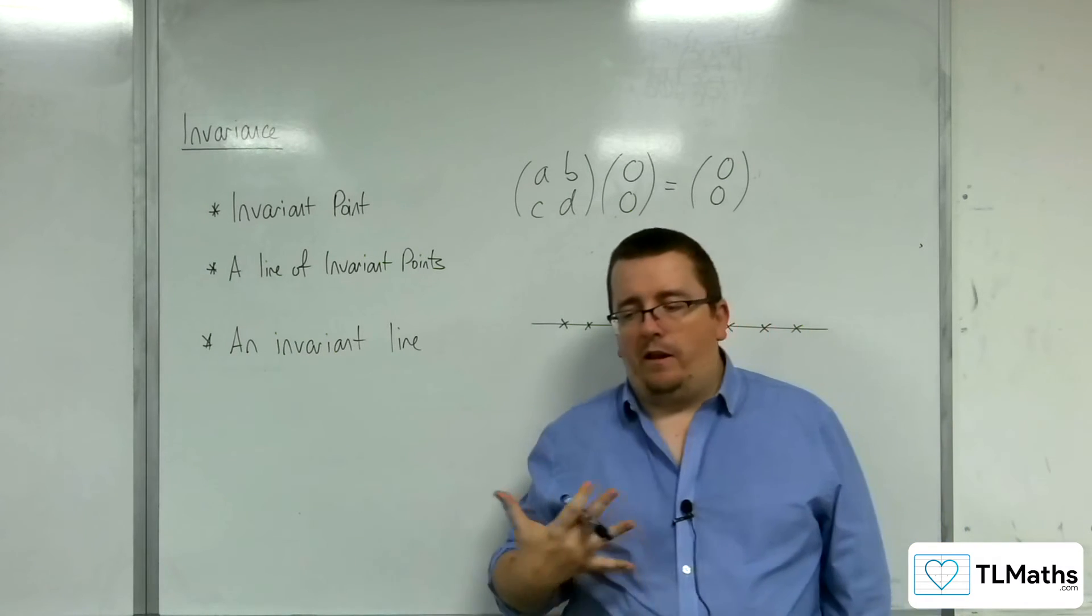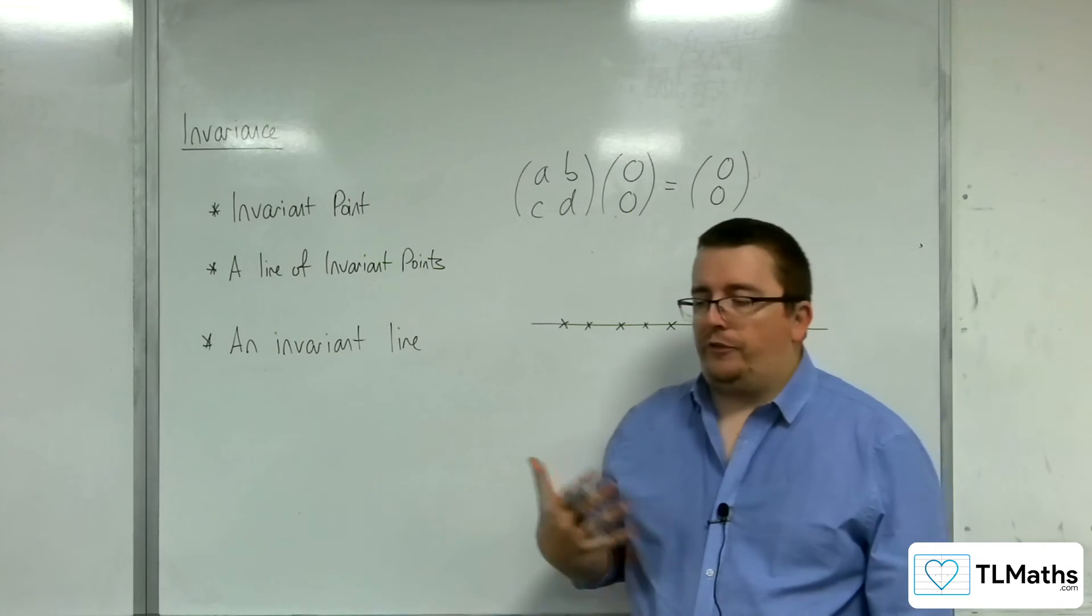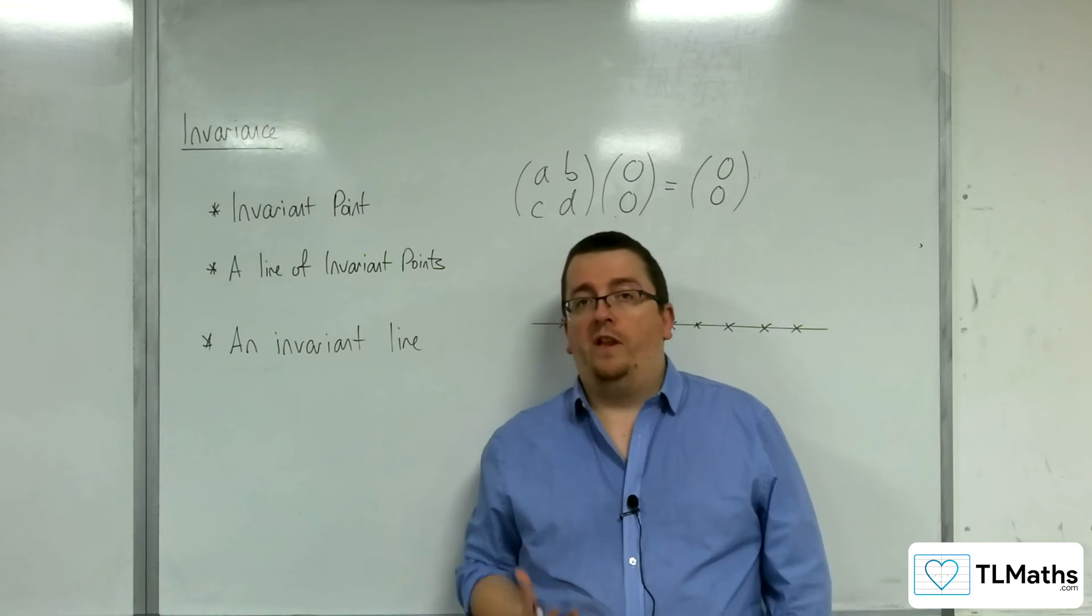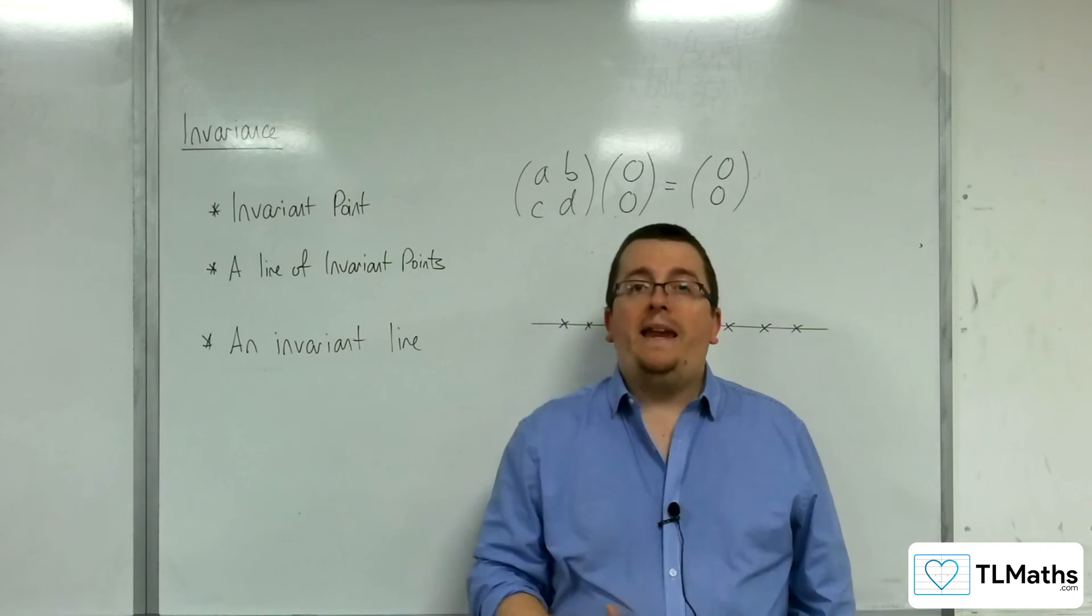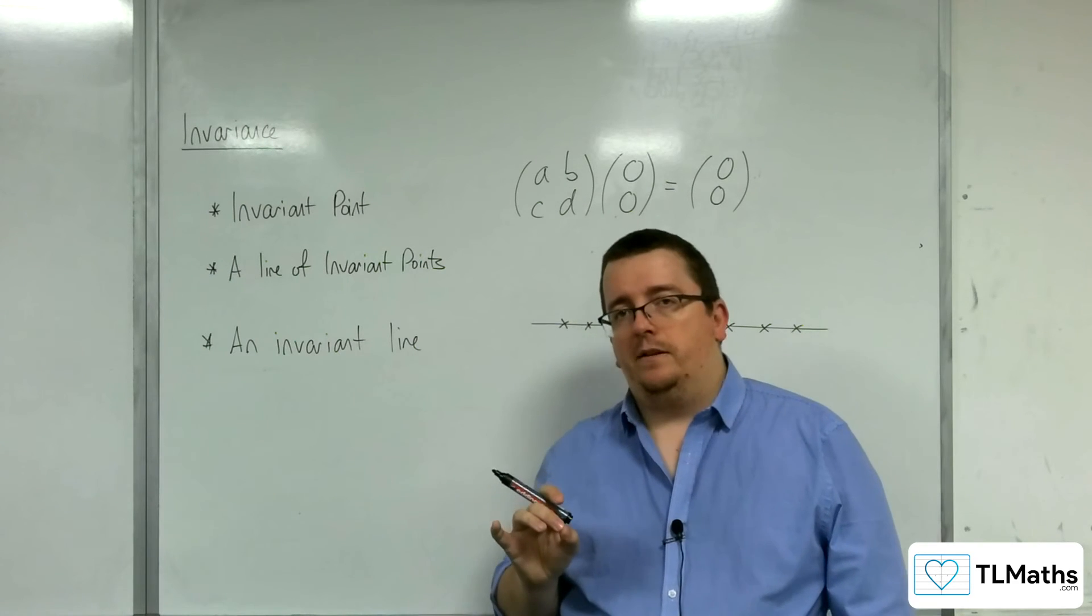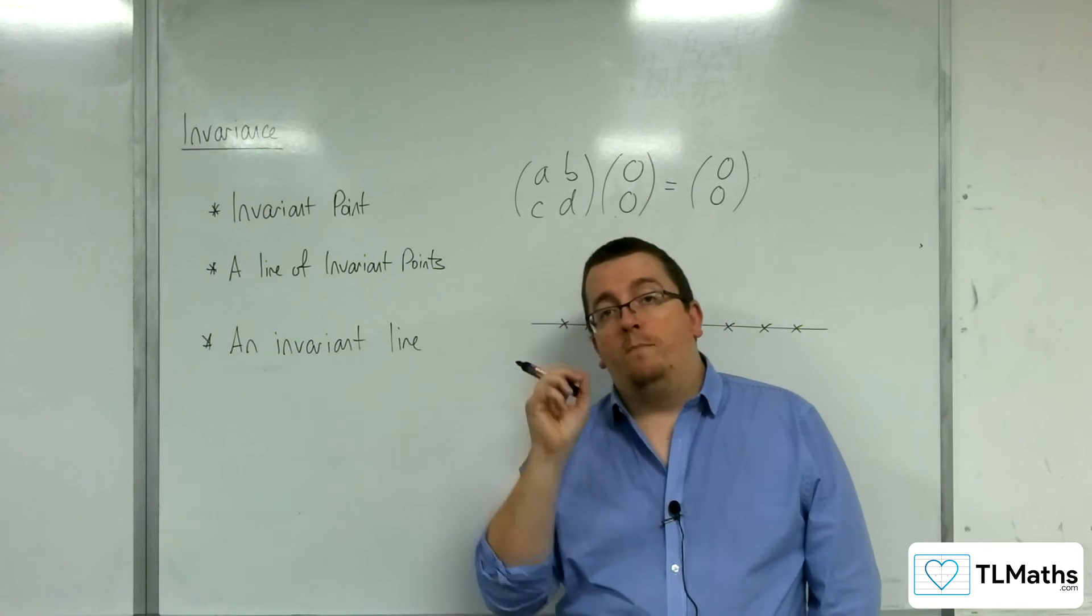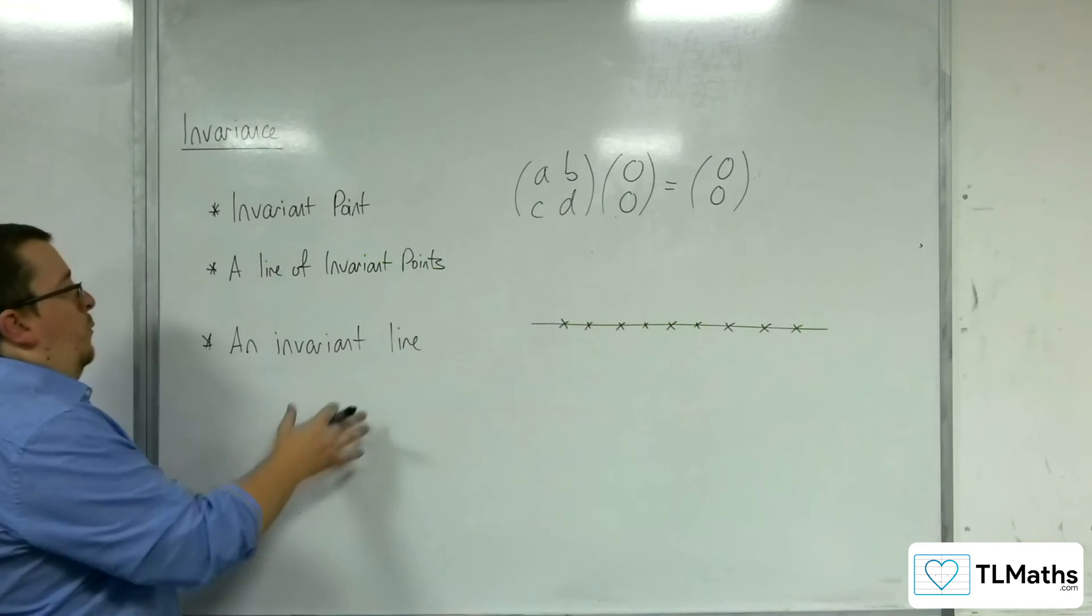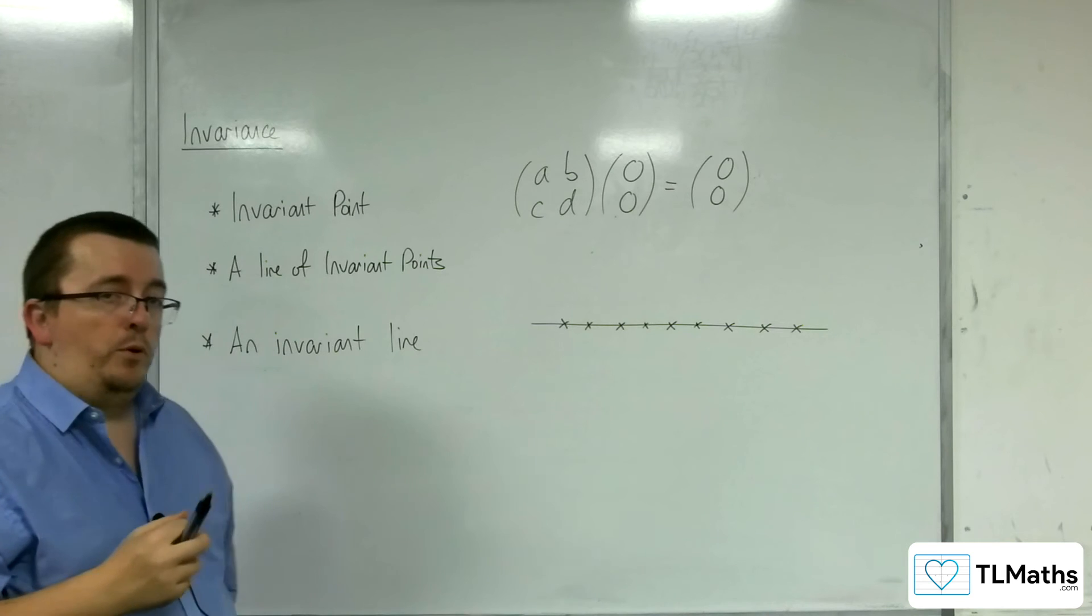Because an invariant line just says that points that started on the line remain on the line. But that doesn't necessarily mean that they remain fixed. So we're not just talking about a line of invariant points here.